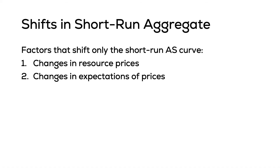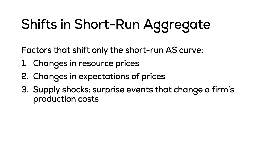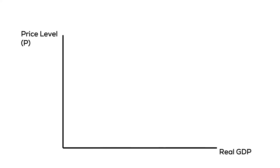Finally, supply shocks are surprise events that change a firm's production costs. An unexpected increase in the cost of production will lead to a reduction in output and a decrease in the short-run aggregate supply curve.